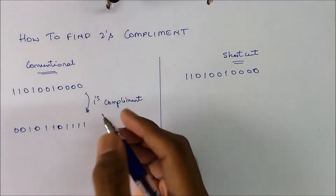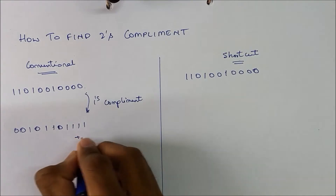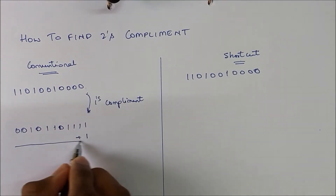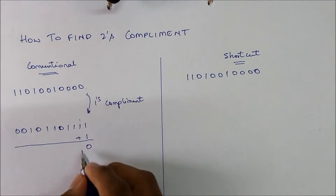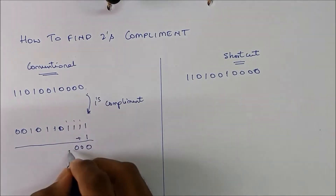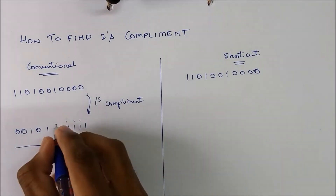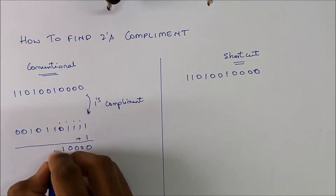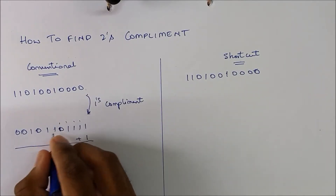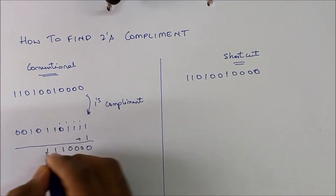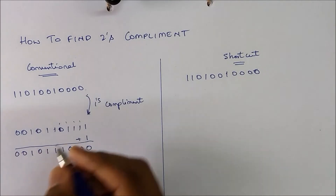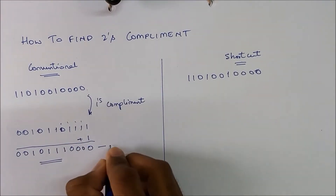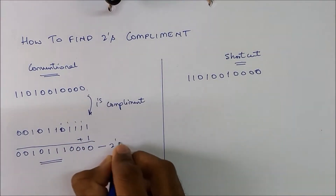Next we add 1 to this 1's complement. 1 plus 1 is 0 with carry 1; carry 0, carry 0, carry 1; then 1, 1, 0, 1, 0, 0. So this is the 2's complement of the given binary number.